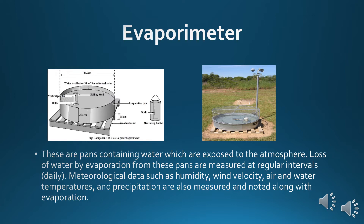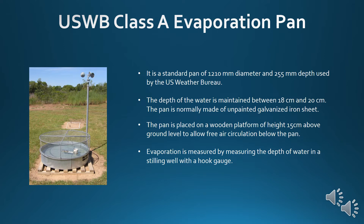The following slides will contain the types of evaporation pans. The USWB Class A evaporation pan is a standard pan of 1,210 mm in diameter and 255 mm in depth, used by the US Weather Bureau. The depth of water is maintained between 18 cm and 20 cm. The pan is normally made of unpainted galvanized iron sheet and placed on a wooden platform 15 cm above ground level to allow free air circulation below the pan. Evaporation is measured by measuring the depth of water in a stilling well with a hooked gauge.